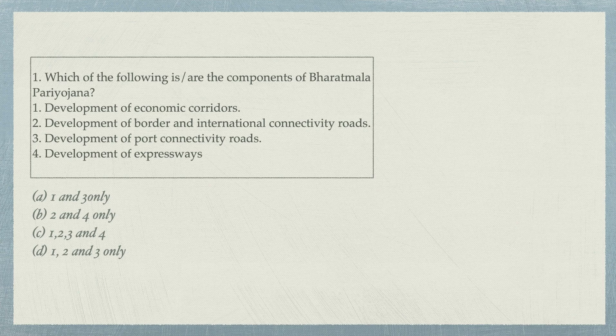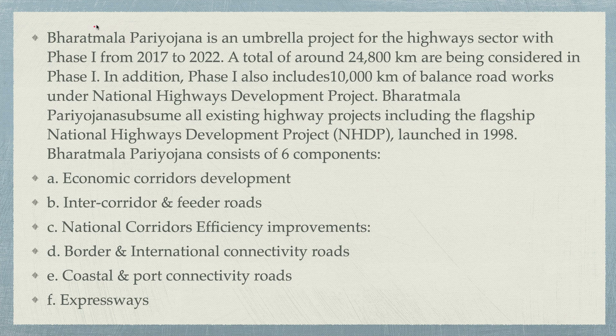First question: Which of the following is not one of the components of Bharat Mata Pariyojana? The components are: development of the economy corridor, development of border and international connectivity roads, development of port connectivity roads, and development of expressways. The right answer is option C. Bharat Mala Pariyojana is an umbrella project for the highway sector, Phase 1 from 2017 to 2022.